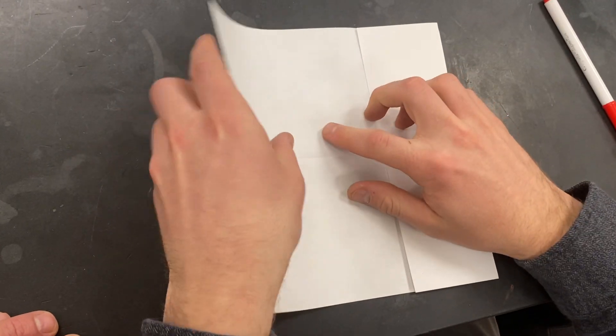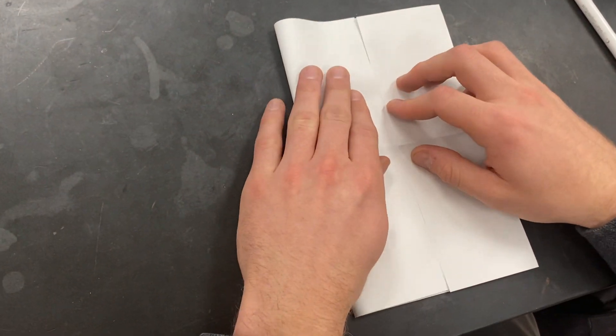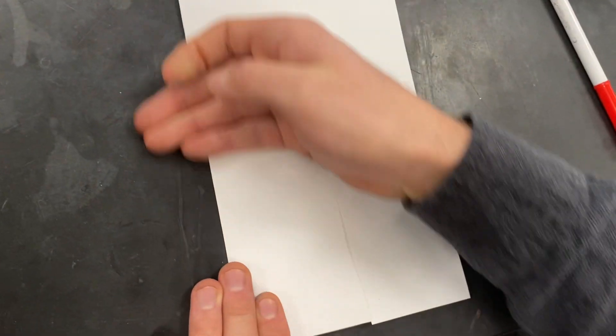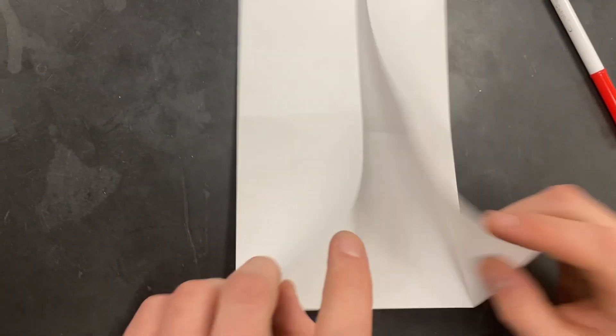Then you're taking this side and doing the same thing. Back to a corner like this. So it should eventually look like this. You have eight little panels.